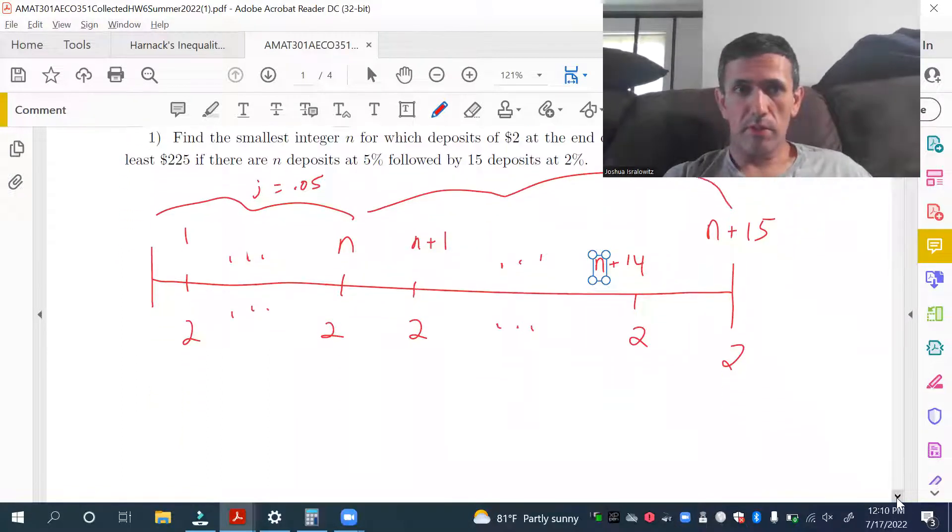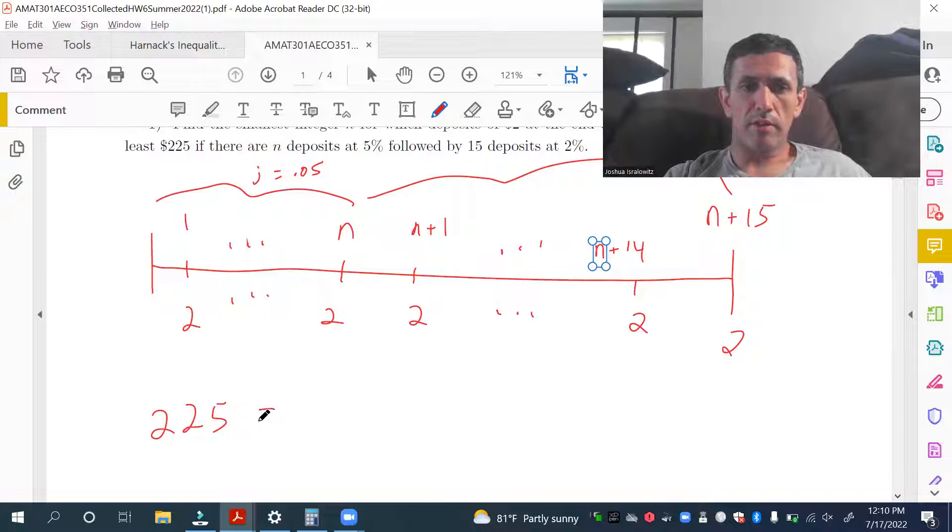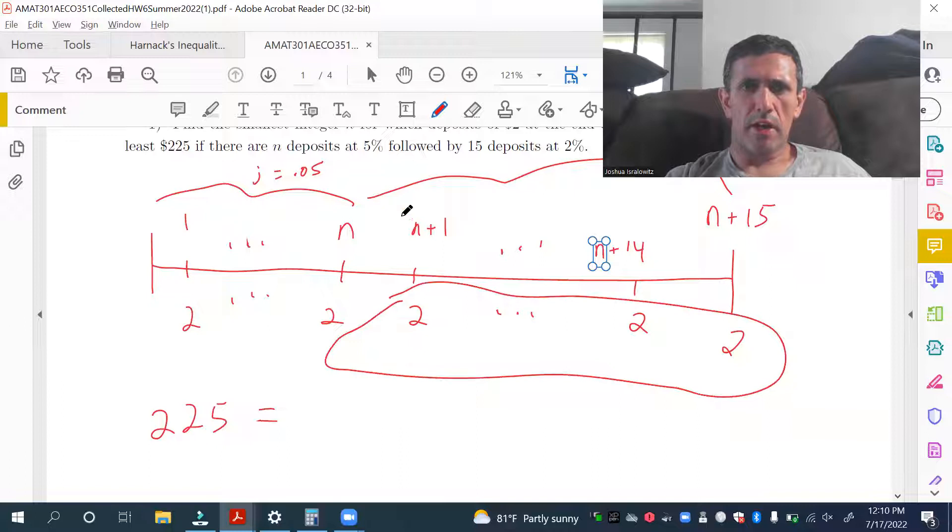So, yeah, I'm going to break this up into two annuities. So, just like in the lecture video, 225, we're just going to solve for N and then round up to the nearest integer. So, 225 is, let's look at, let's do the last 15 payments of two.